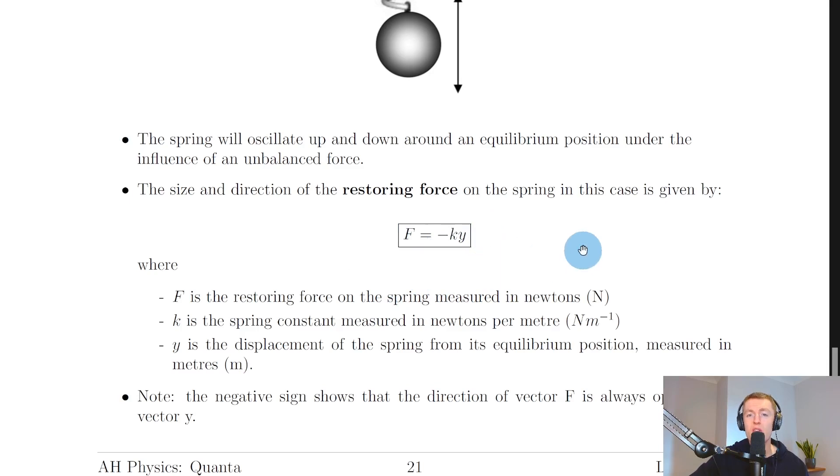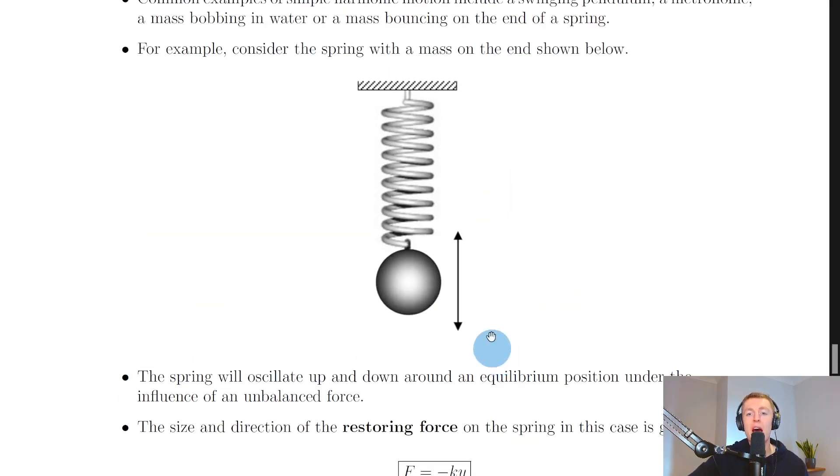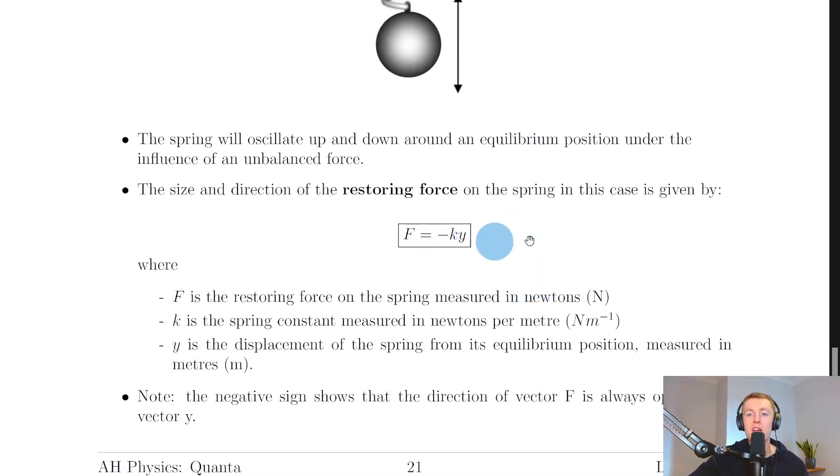One last thing to point out is that you might see this equation written in a slightly different way. You might see it written as F equals minus kx instead of minus ky, and that's because if the object was moving horizontally, i.e. from left to right and then from right to left and so on, then it would make more sense to talk about the displacement being x rather than y. In this case we were talking about the ball moving up and down, i.e. in the y direction, so that's why we've used y for displacement here.